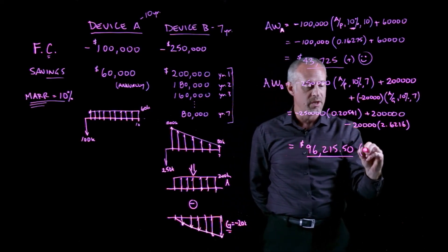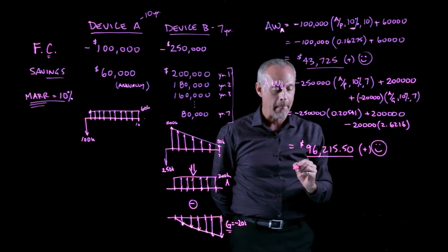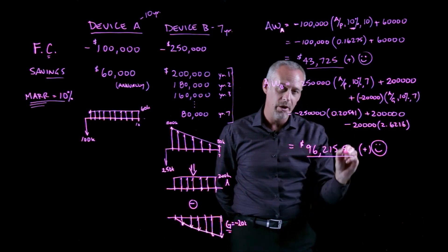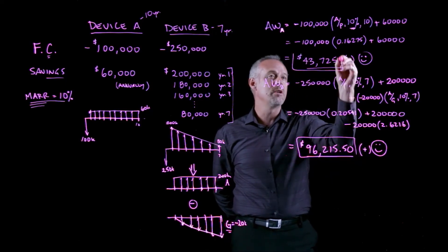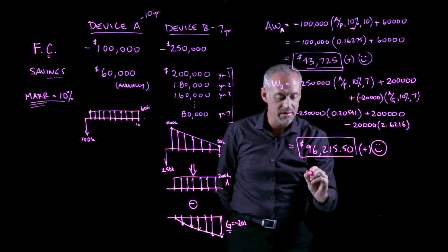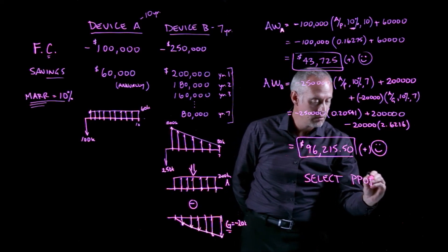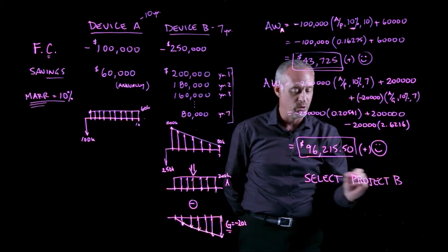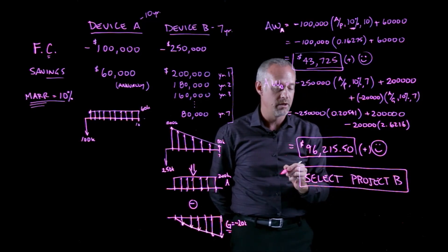We also end up with a positive annual worth for device B — that's good. The larger positive annual worth is better. Comparing $96,215 for device B versus $43,725 for device A, we always want to select device B. I always encourage students to write that conclusion explicitly: select device B. This is the decision you make based on the engineering economic analysis.